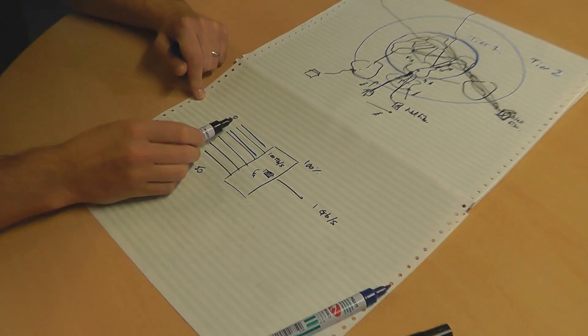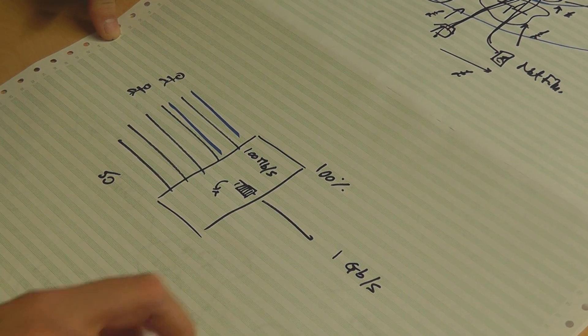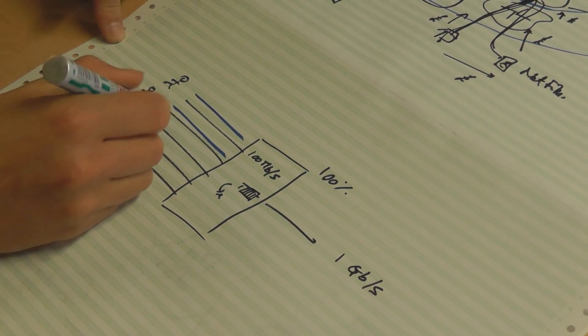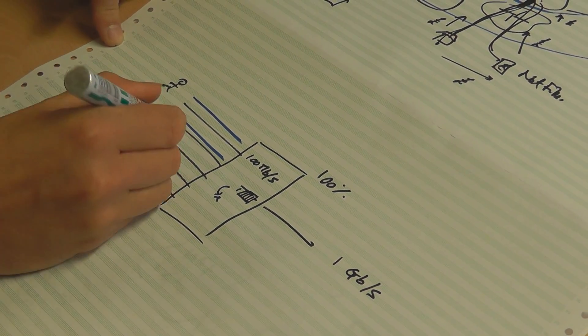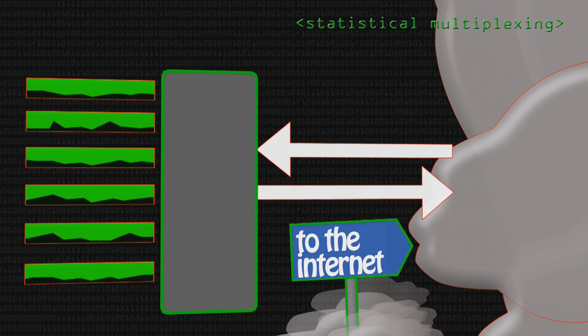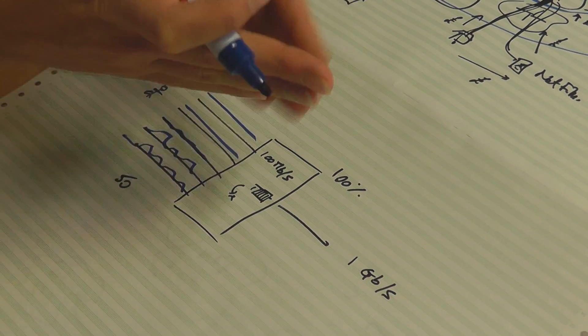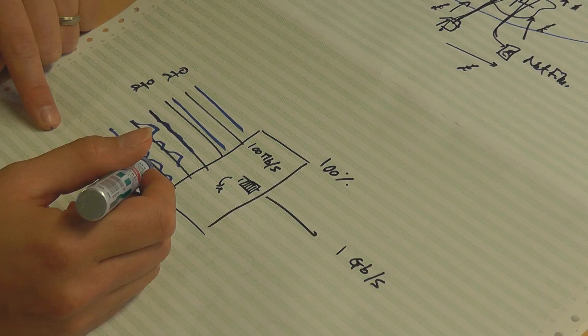However, in practice it's unlikely that all users are going to be using it at 100% of the rate 100% of the time. Some users can be busy, some users are going to be quiet and maybe just use it a little bit, and some users will be bursty — it'll all fit together on average and everybody will be okay. This is called statistical multiplexing: you're fitting things together like this.